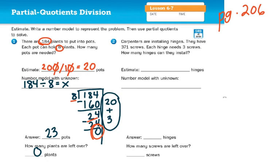Number two. Carpenters are installing hinges. They have 371 screws. Each hinge needs three screws. How many hinges can they install? I'm going to change 371 to 360 and divide that by three. Because I know my 12s. I know that 36 divided by three gives me 12, and then I just move that zero over. So I know that my answer should be close to 120 hinges. I'm going to write the number model with the unknown: 371 divided by three equals H for hinge.